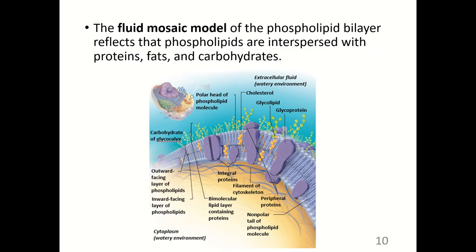The fluid mosaic model of the phospholipid bilayer reflects that phospholipids are interspersed with proteins, fats, and carbohydrates. Proteins shown in purple can extend all the way through the cell membrane — these are called integral proteins — or they may be located on the periphery, called peripheral proteins. The fats include cholesterol, which has a waxy consistency and helps stabilize the cell membrane. The carbohydrates form the glycocalyx, which aids in cell-to-cell communication.